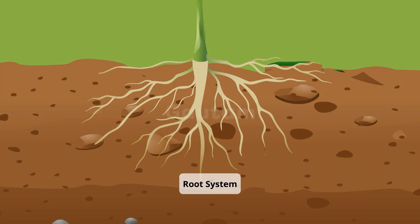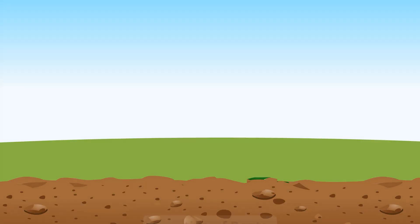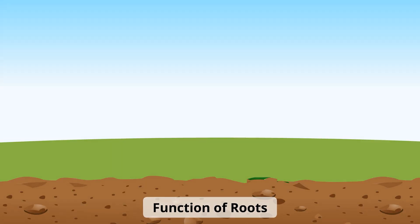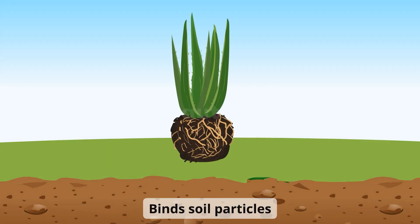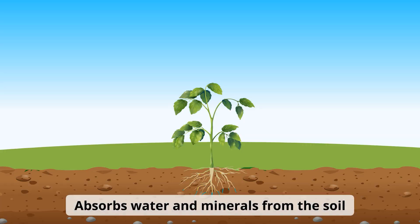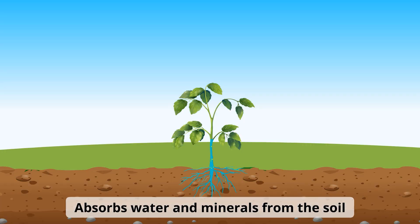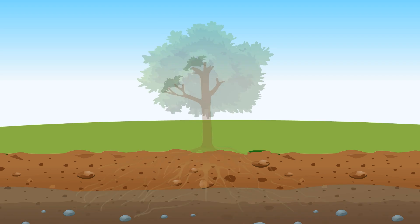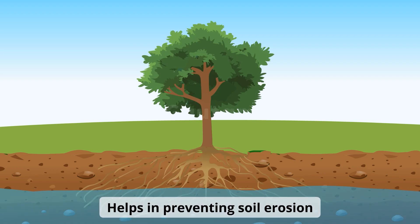The part of the plant that stays underground is called the root system. The roots of the plant perform important functions such as binding the soil particles and absorbing water and minerals from the soil. They also help in preventing soil erosion.